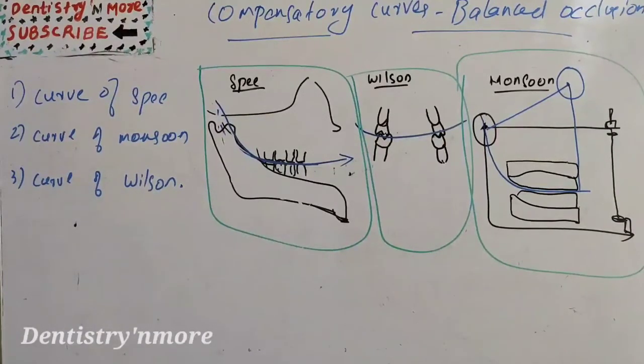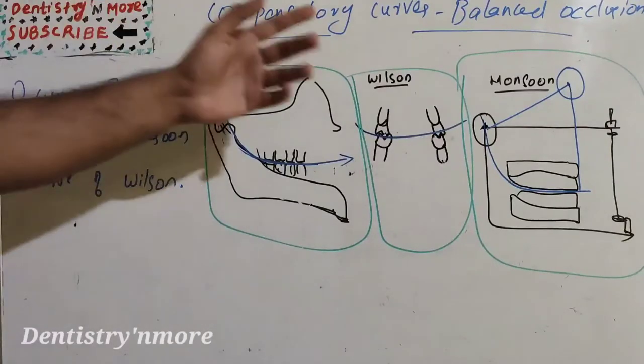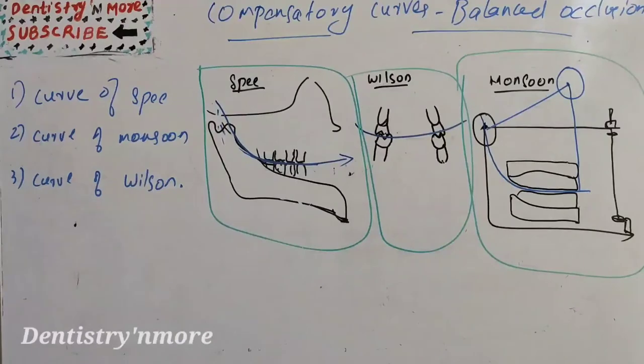Ultimately, these compensatory curves manage the teeth alignment in such a way that there will not be any dislodgement or deviation of occlusal forces. It will be in harmony so to achieve a balanced occlusion.